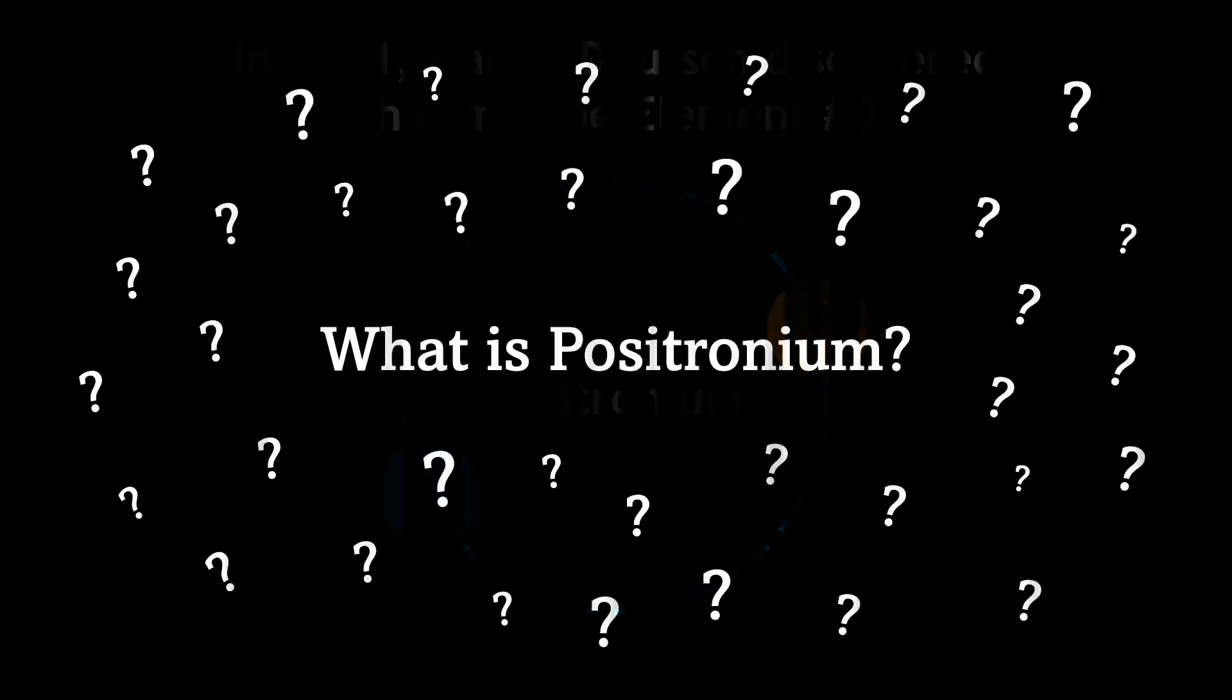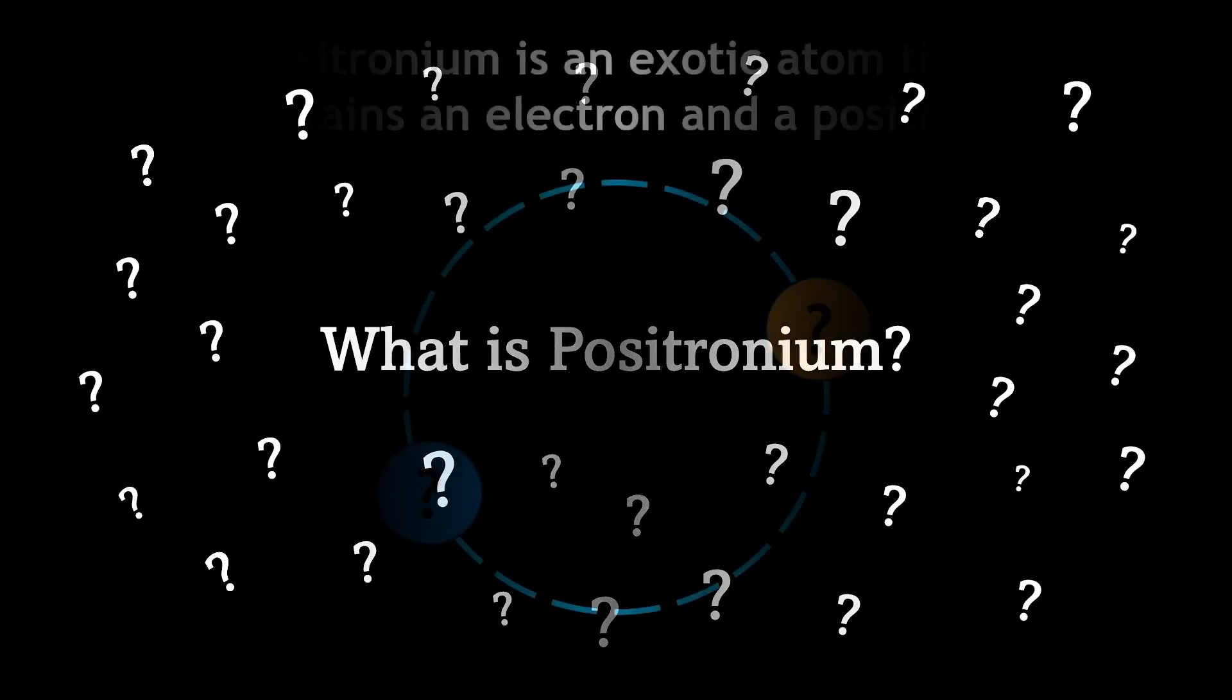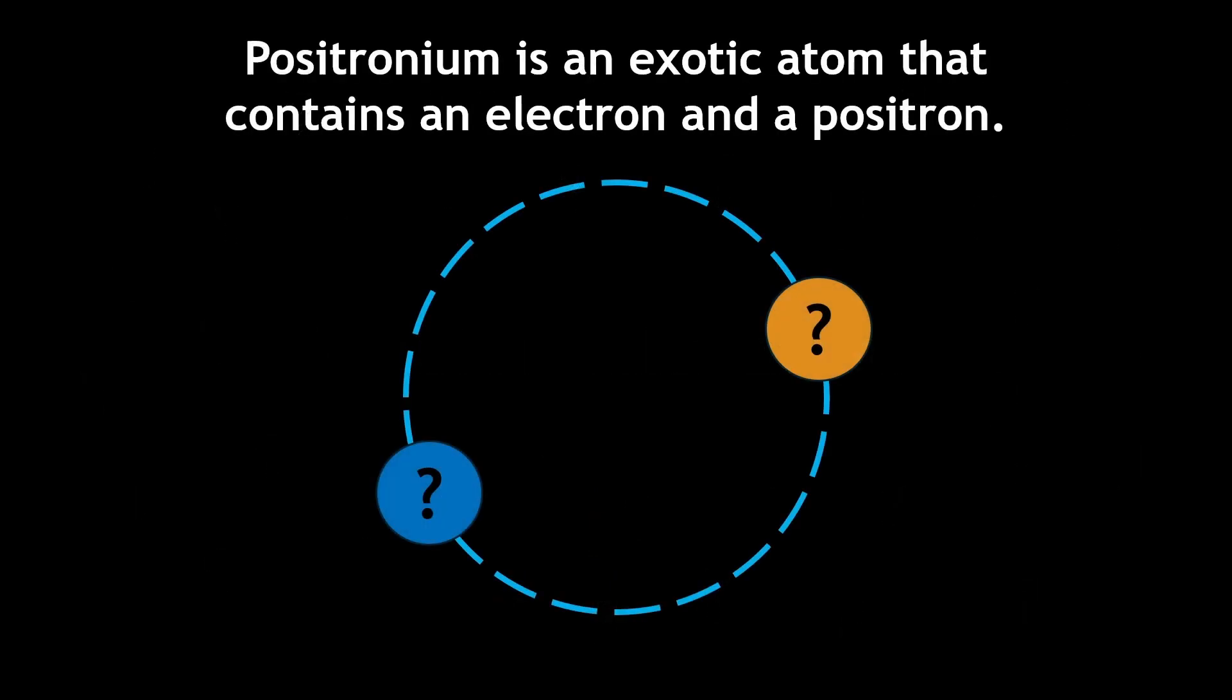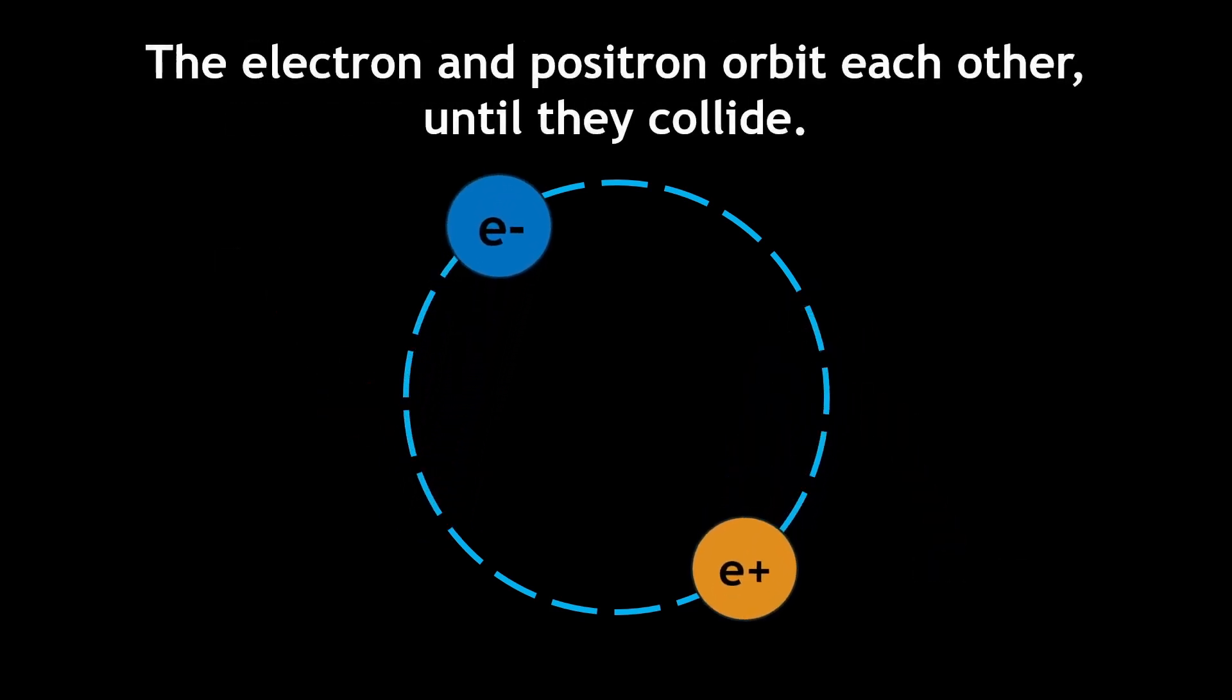So what exactly is positronium? Positronium is an exotic atom that contains an electron and its antimatter counterpart, a positron. These two subatomic particles orbit each other until they collide.